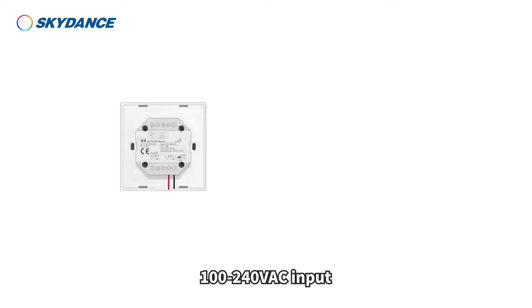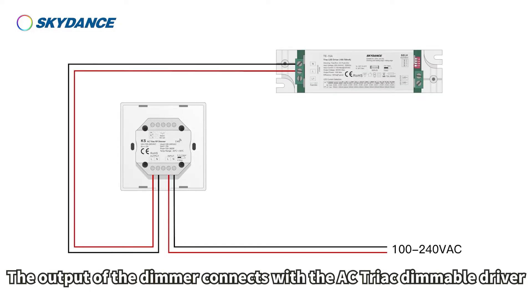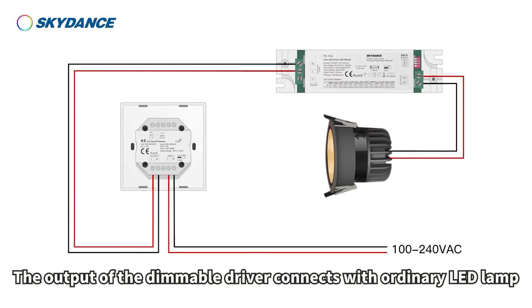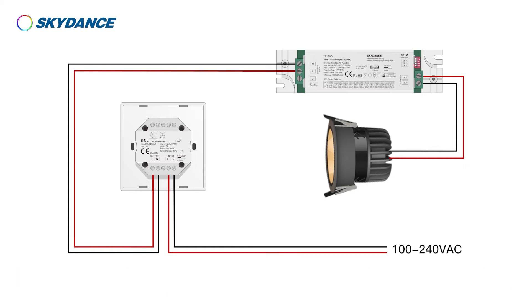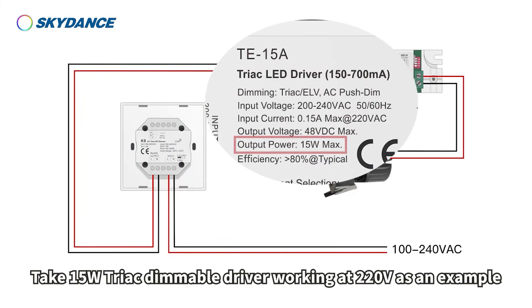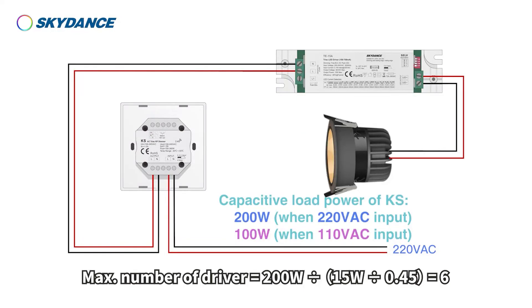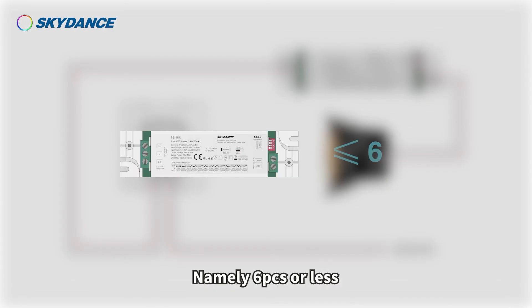Application 3: 100–240 volts AC input. The output of the dimmer connects with the AC triac dimmable driver. The output of the dimmable driver connects with ordinary LED lamps. The max quantity of connected drivers should also be calculated with power factor 0.45. Take a 15-watt triac dimmable driver at 220 volts as an example. Max number of drivers equals 200 watts divided by 15 watts divided by 0.45, which equals 6. Namely 6 pieces or less.